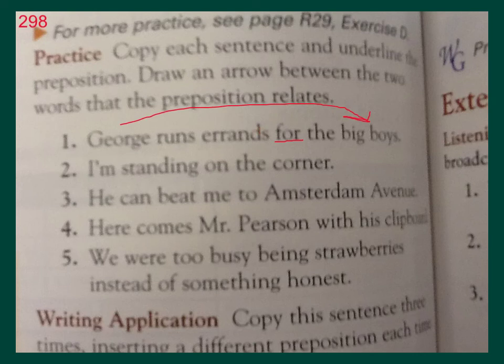And you're going to draw an arrow between the two words that the preposition relates. What are the two nouns? Well, it's George and boys, primarily. George is running errands for the boys. That's why the arrow goes from George to the boys. Don't forget — even if I haven't reminded you in the past — add a sentence of your own.